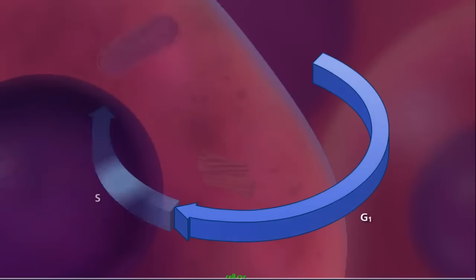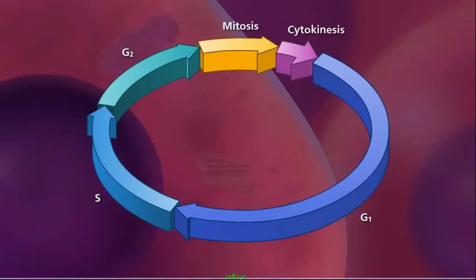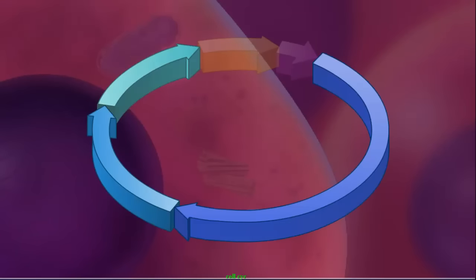The replication of DNA and the formation of sister chromatids is one part of the entire cell cycle. To prepare for cell division, the cell goes through interphase, which can be divided into three distinct phases.